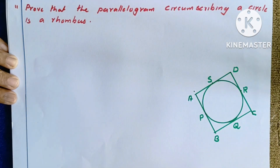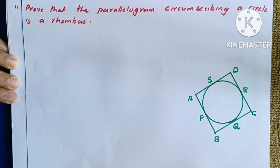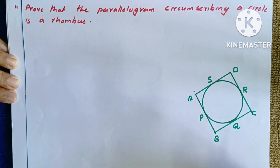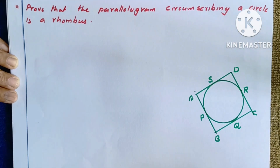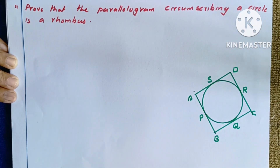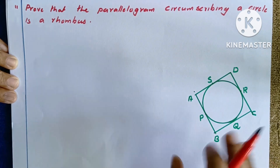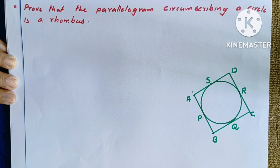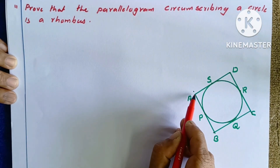The next part involves a parallelogram circumscribing a circle. We need to prove it is a rhombus — that is, all four sides are equal, since a parallelogram has opposite sides equal.